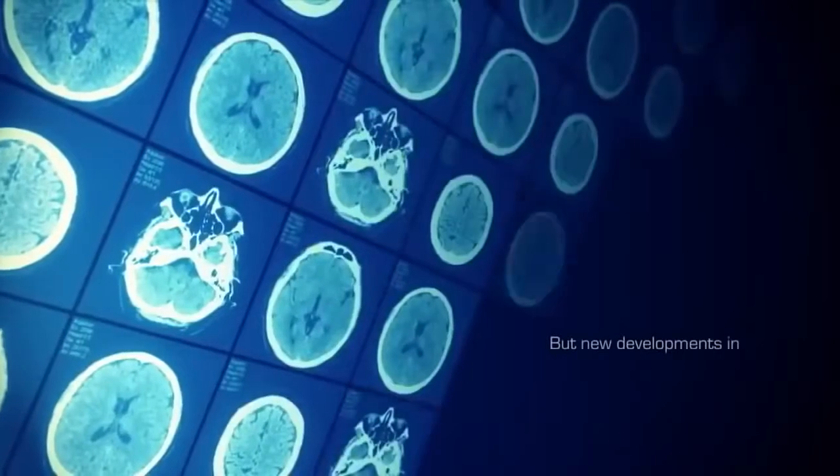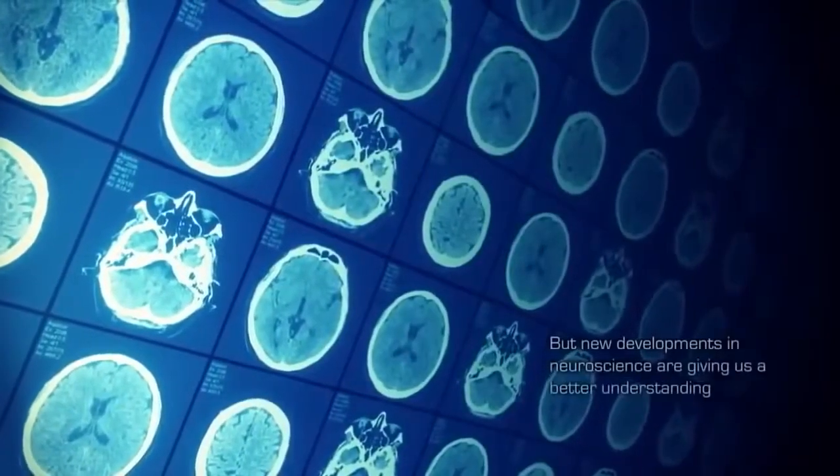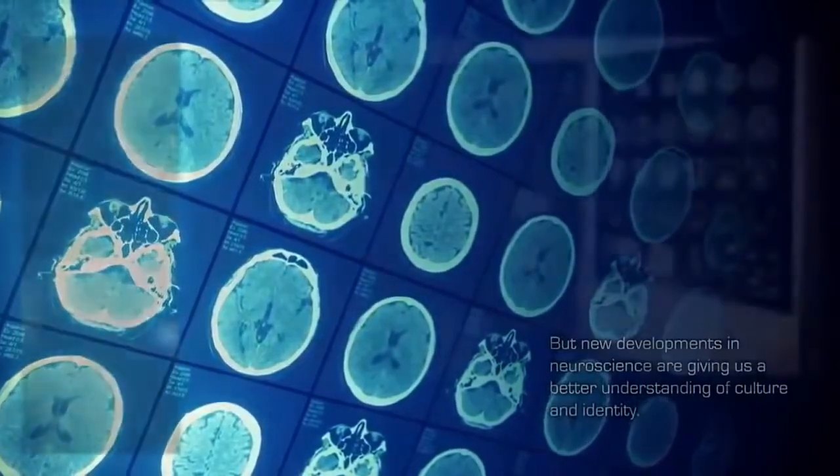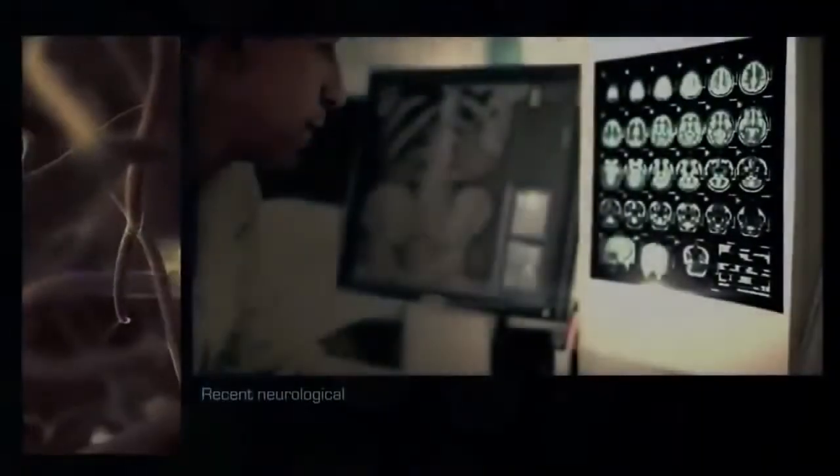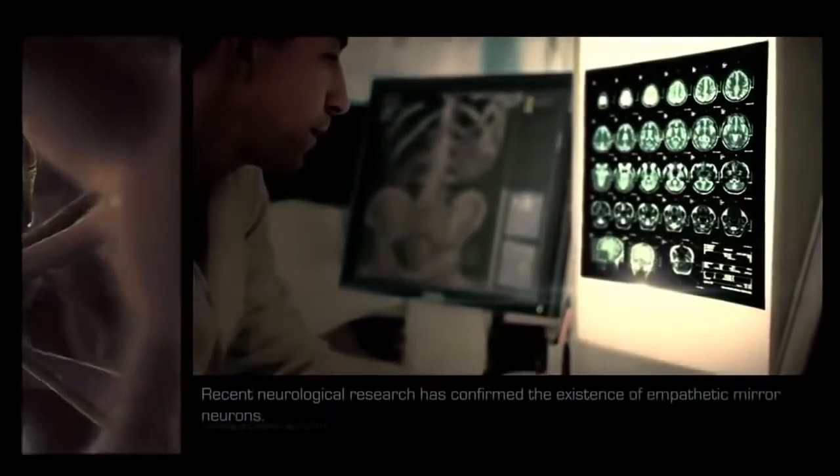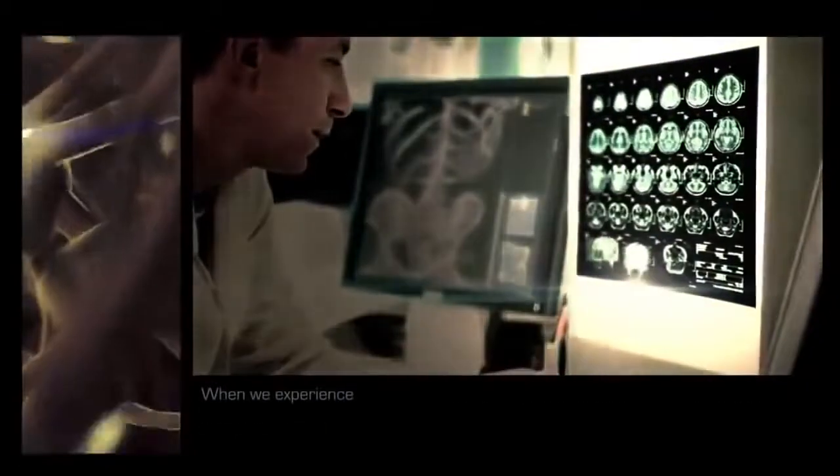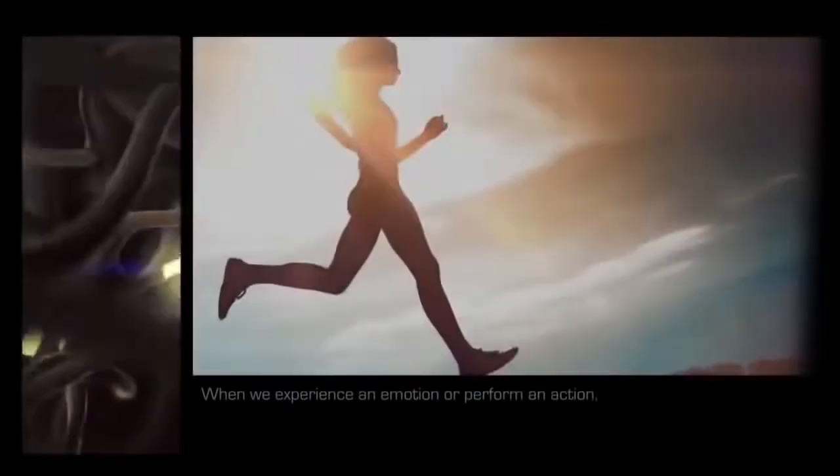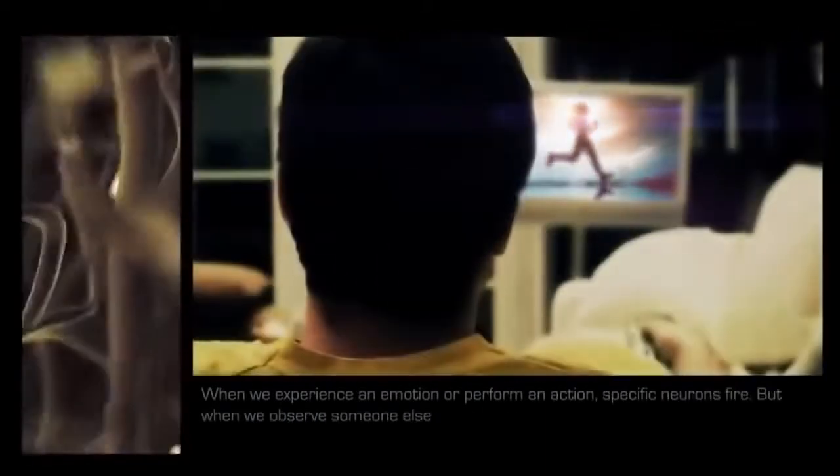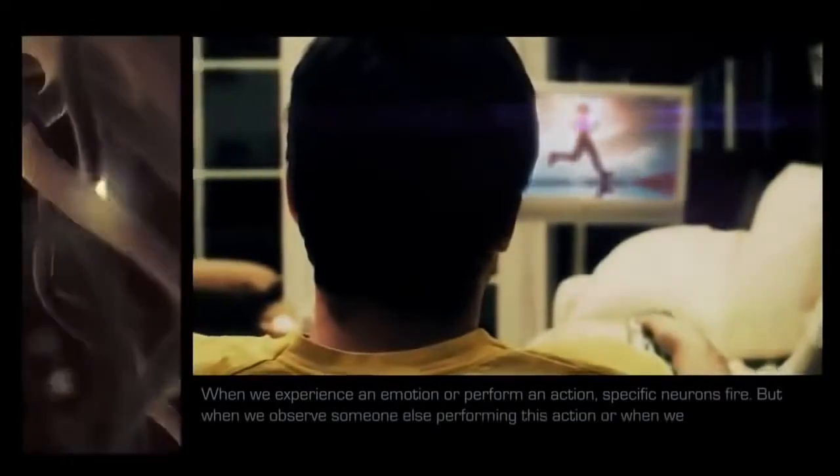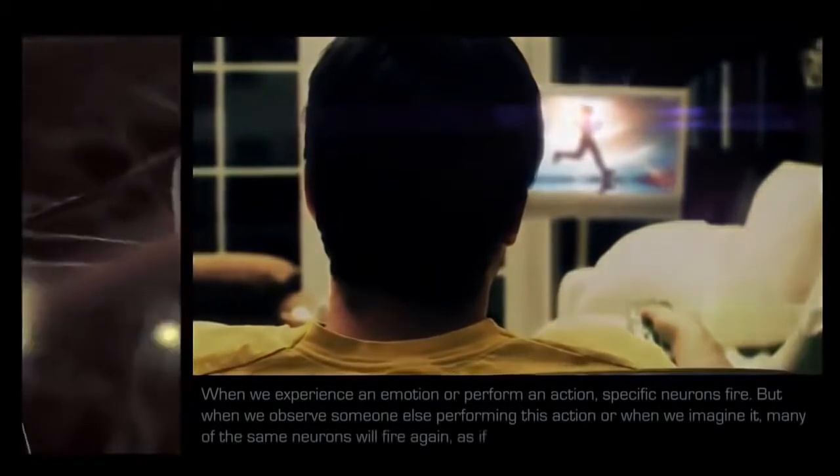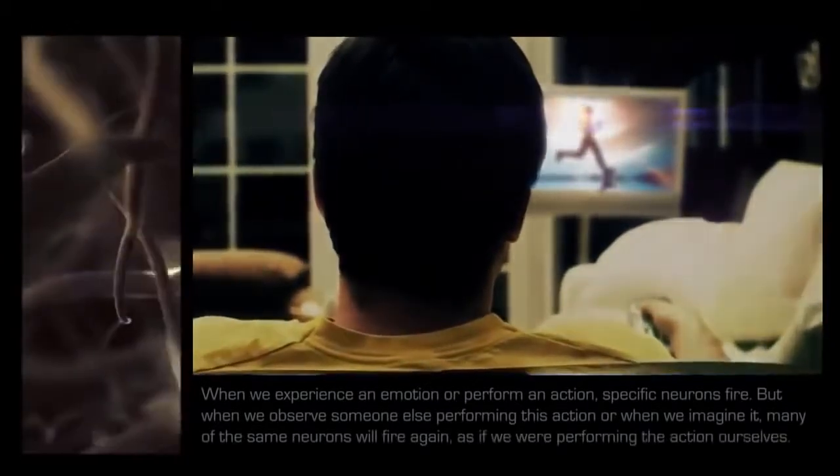But new developments in neuroscience are giving us a better understanding of culture and identity. Recent neurological research has confirmed the existence of empathetic mirror neurons. When we experience an emotion or perform an action, specific neurons fire. But when we observe someone else performing this action, or when we imagine it, many of the same neurons will fire again.